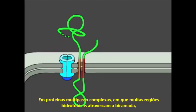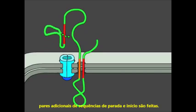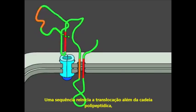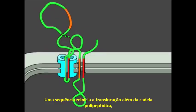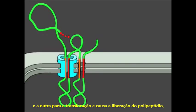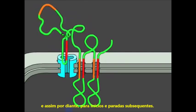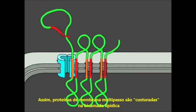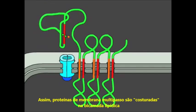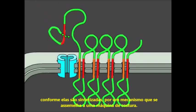In complex multipass proteins, in which many hydrophobic regions span the bilayer, additional pairs of stop and start sequences come into play. One sequence re-initiates translocation further down the polypeptide chain, and the other stops translocation and causes polypeptide release, and so on for subsequent starts and stops. Thus, multipass membrane proteins are stitched into the lipid bilayer as they are being synthesized by a mechanism resembling a sewing machine.